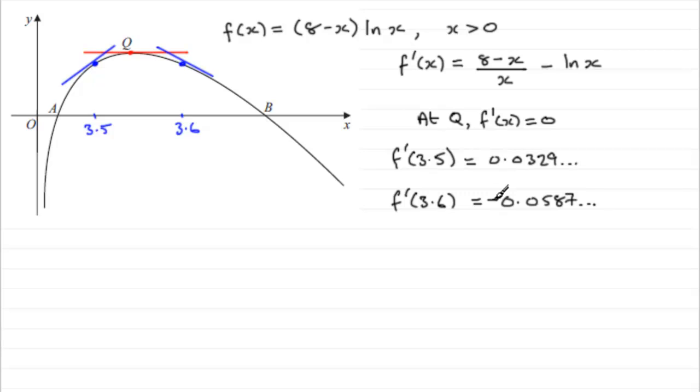So we've got here a sign change. It's gone from plus to minus. So because this curve is continuous, there's no breaks in the curve, then the x-coordinate of Q must lie between 3.5 and 3.6.